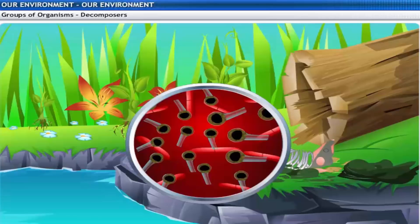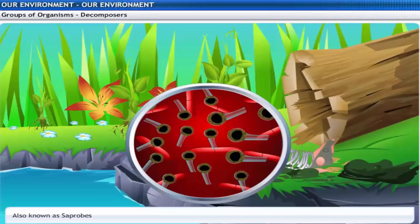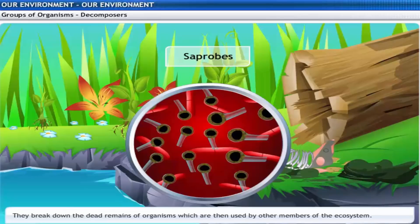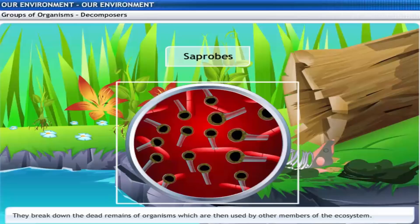Let me sum it up. Decomposers are also known as organisms of decay or saprobes. They are microorganisms that break down the dead remains and waste products of organisms that can be used by other members of the ecosystem. Bacteria and fungi are examples of saprobes.